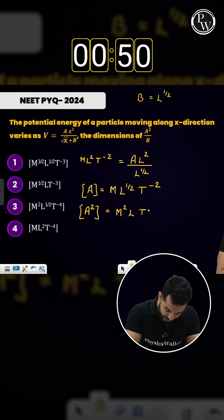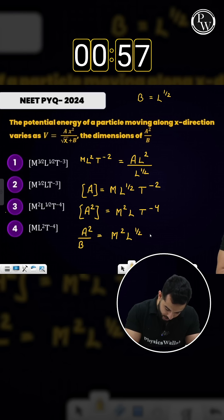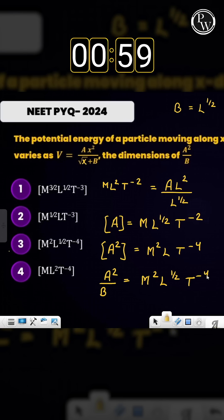So that means a squared by b will be M² L^(1/2) T⁻⁴, which is your option number third.